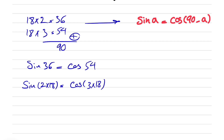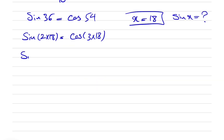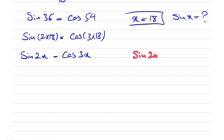Now we're going to let x be 18. What we're looking for is sine of x. So we have sine of 2x is equal to cosine of 3x. We need two important formulas: sine of 2a equals 2 sine of a times cosine of a.